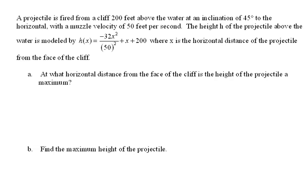Okay, here we have a projectile motion problem. A projectile is fired from a cliff 200 feet above the water at an inclination of 45 degrees to the horizontal with a muzzle velocity of 50 feet per second.